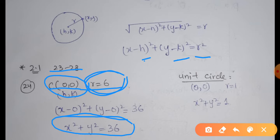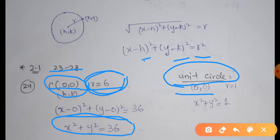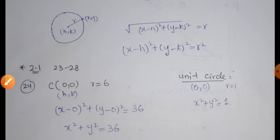That gives X minus 0 whole square plus Y minus 0 whole square equals R squared, which is 6 squared = 36. So X squared plus Y squared equals 36 is the equation of the required circle. We would also like to mention the unit circle: a unit circle is centered at the origin with radius 1, so its equation is X squared plus Y squared equals 1.